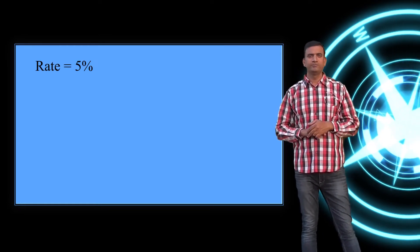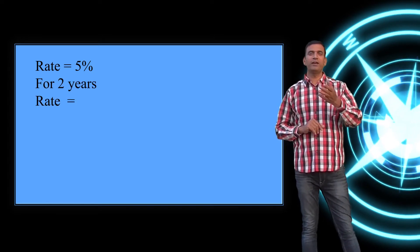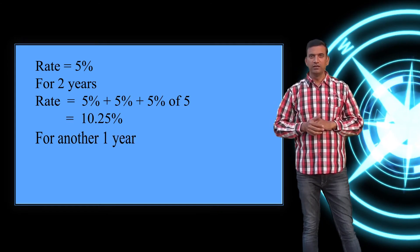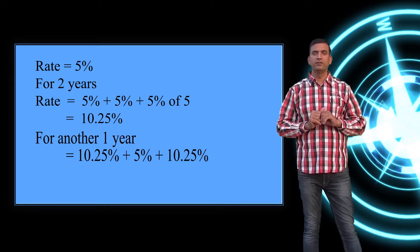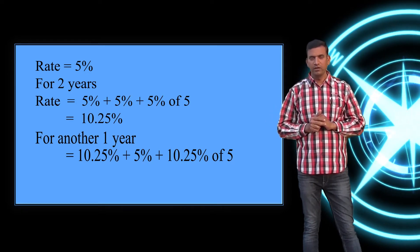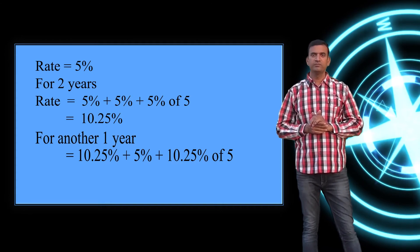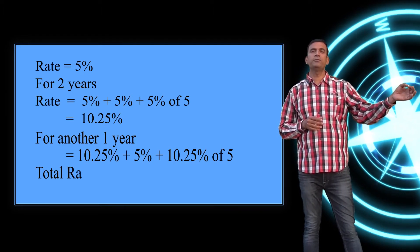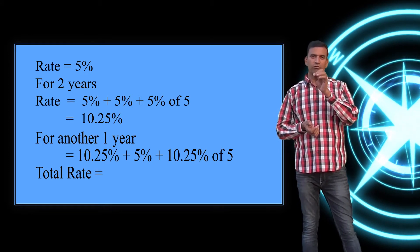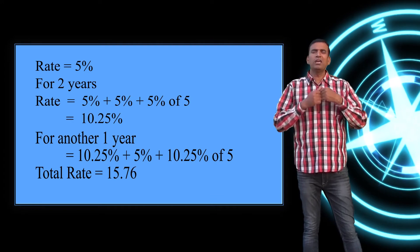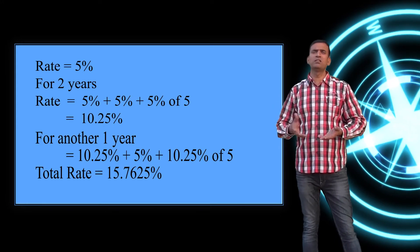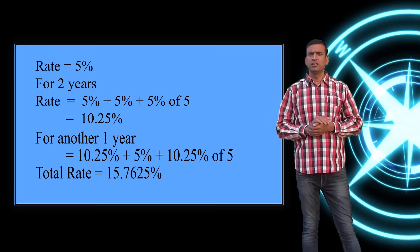Another example: rate = 5%, time = 3 years. For two years: 5 + 5 + 5% of 5 = 10.25%. Adding the third year: 10.25 + 5 = 15.25, plus 5% of 10.25 = 0.5125, giving a total rate of 15.7625%. Once you get the total rate, you can easily find the compound interest — no need to find the amount and then subtract the principal.